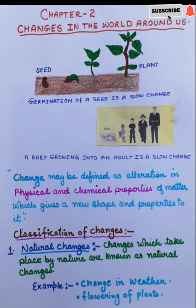For example, you take a seed and after some days, you will get a big plant. Similarly, from a baby, you grow into an adult — that is also a change taking place. So from the conclusion, the definition: change may be defined as alteration in physical and chemical properties of matter which gives a new shape and properties to it.